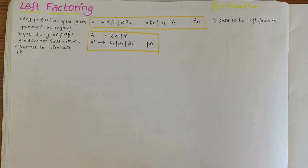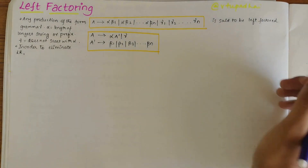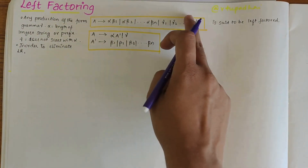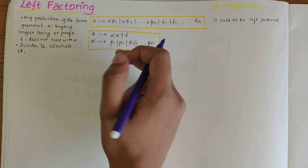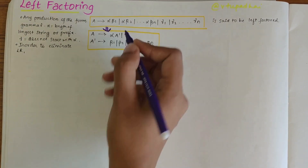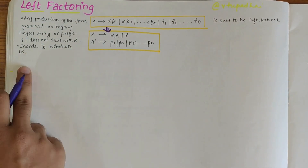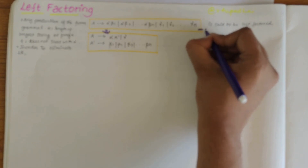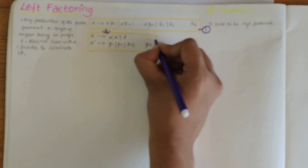So for a given production of this form, if you convert it into these two forms, then you are eliminating the left factoring. Let's take this as equation one.